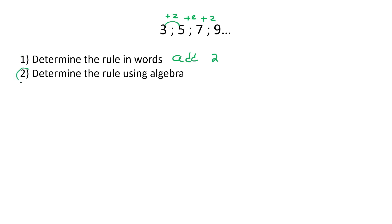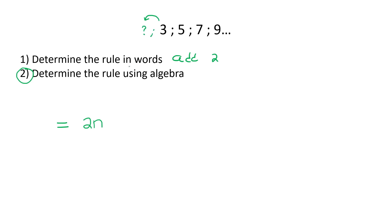Let me show you a nice easy way to come up with a rule using algebra. Your teacher might use different letters, but all I want you to do is write equals, then the number that you are adding each time — it could also be a negative. Write that number down and then put a letter. Teachers usually use the letter N. Then try to work out what number would come before the first term if we went backwards. We should be able to work out that this number would have to be a one, because if you add two, it gives you three. So put a positive one.